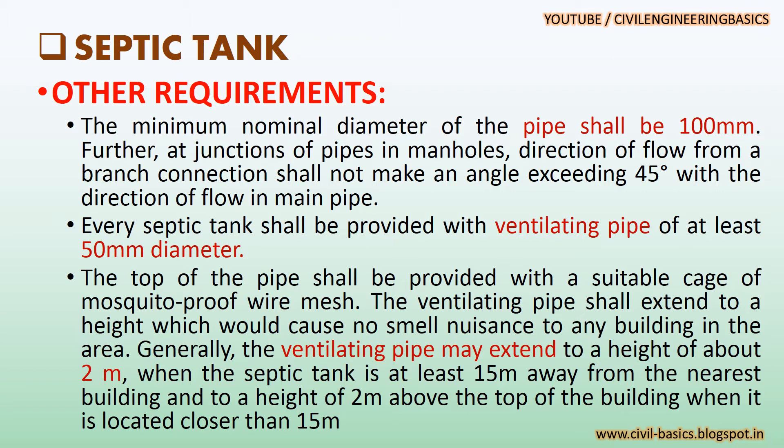The ventilating pipe shall extend to a height which would cause no smell nuisance to any building in the area. Generally, the ventilating pipe may extend to a height of about 2 meter when the septic tank is at least 15 meter away from the nearest building, and to a height of 2 meter above the top of the building when it is located closer than 15 meter.